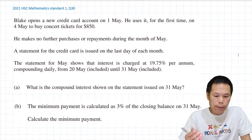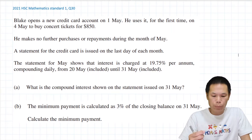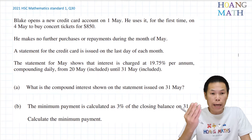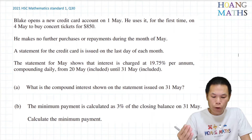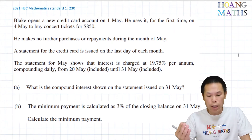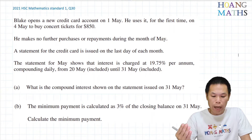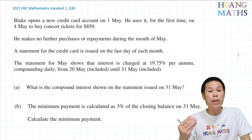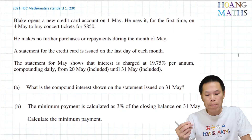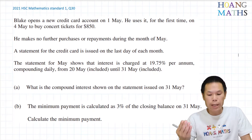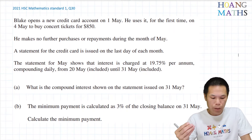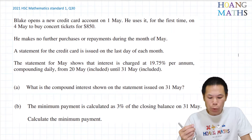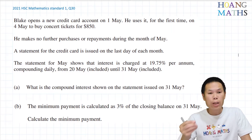First one: Blake opens a new credit card account on the 1st of May. He uses it for the first time on the 4th of May to buy a concert ticket for $850. He makes no further purchases or repayments during the month of May. A statement for the credit card is issued on the last day of each month. The statement for May shows that interest is charged at 19.75% per annum, compounded daily, from the 20th of May included until the 31st of May included. Part I: What is the compound interest shown on the statement issued on the 31st of May?